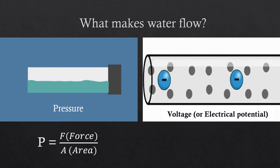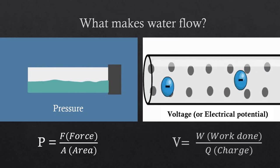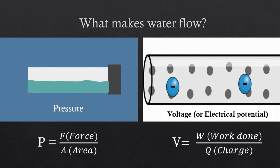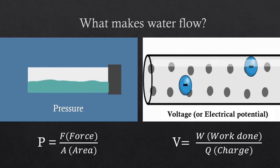Pressure is given by the formula force over area. Same for voltage is work done over charge. It means how much work has been done to move a coulomb of electrons from one place to another place.